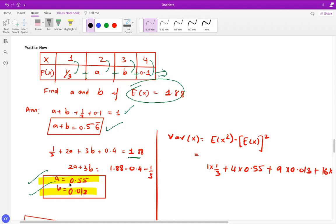First one and second one, you get the value of A is 0.55 and value B is 0.013. Those are the values of A and B.